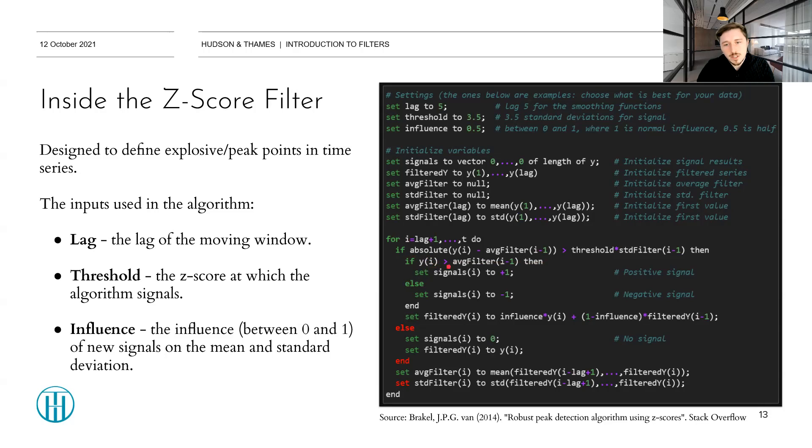If the observation is higher than the average filter, then the positive signal is recorded. Otherwise, a negative signal is recorded. And this right here is exactly where the influence term comes to play. So the new filter observation is recorded as influence, in our case 0.5, multiplied by the set observation. So only the half of the effect of the current observation, which is a signal or an outlier, is being recorded. The other half, so in this case, 1 minus influence, or in this case a half exactly, is taking from the previous filtered observation.